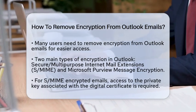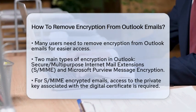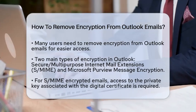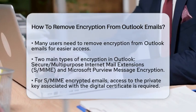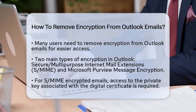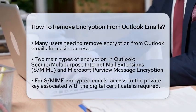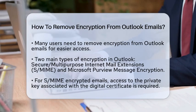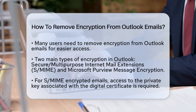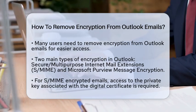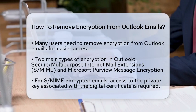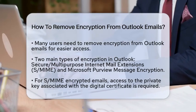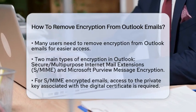First, it is essential to understand the types of encryption used in Outlook. The two main methods are Secure Multipurpose Internet Mail Extensions (S/MIME) encryption and Microsoft Purview Message Encryption. Each has its own way of handling encryption and decryption.